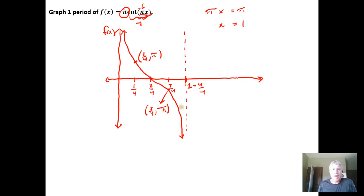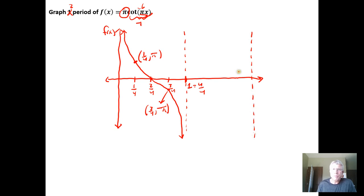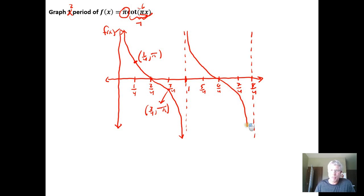For a second period, we replicate the picture by spacing another equal interval between asymptotes and breaking it into four equally sized regions. Continuing the tick marks from 4/4 = 1: we get 5/4, 6/4, 7/4, and 8/4. These can be reduced if desired. The cotangent picture just replicates itself. Key points for the second period are (5/4, 3) and (7/4, −3).